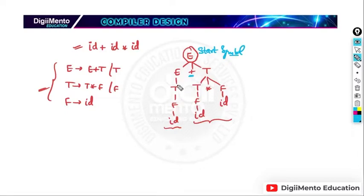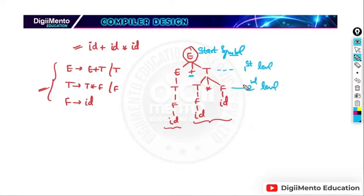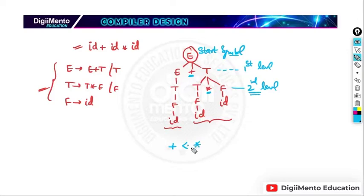The plus operator is closest to the start symbol, so plus will have the least precedence. We can decide precedence based on level: plus is at the first level, closest to the start symbol, so it has the least precedence. The star operator is at the second level — farthest from the start symbol — so star has the highest precedence.